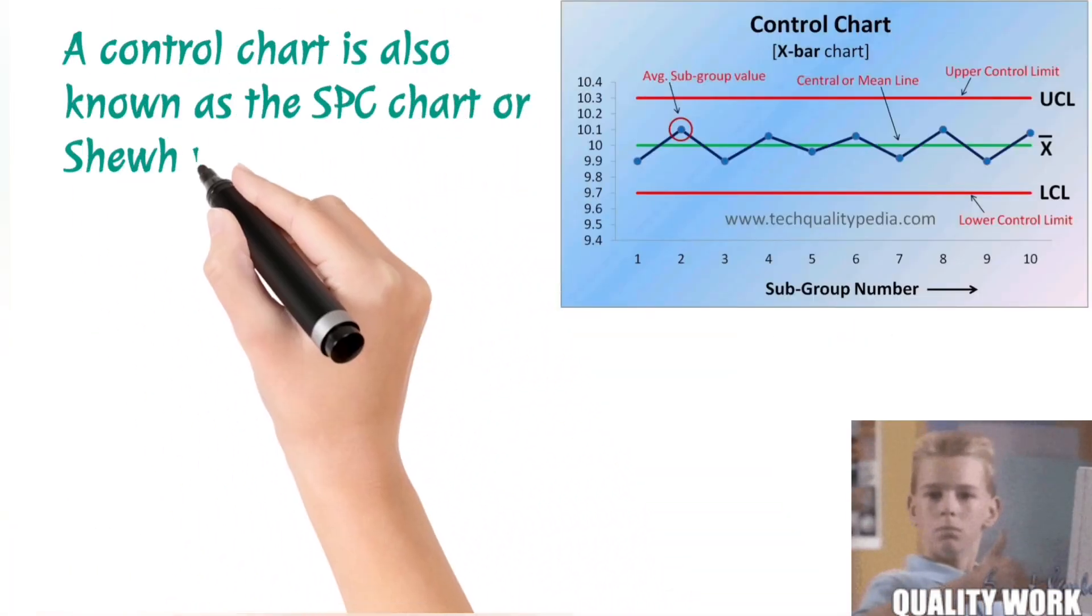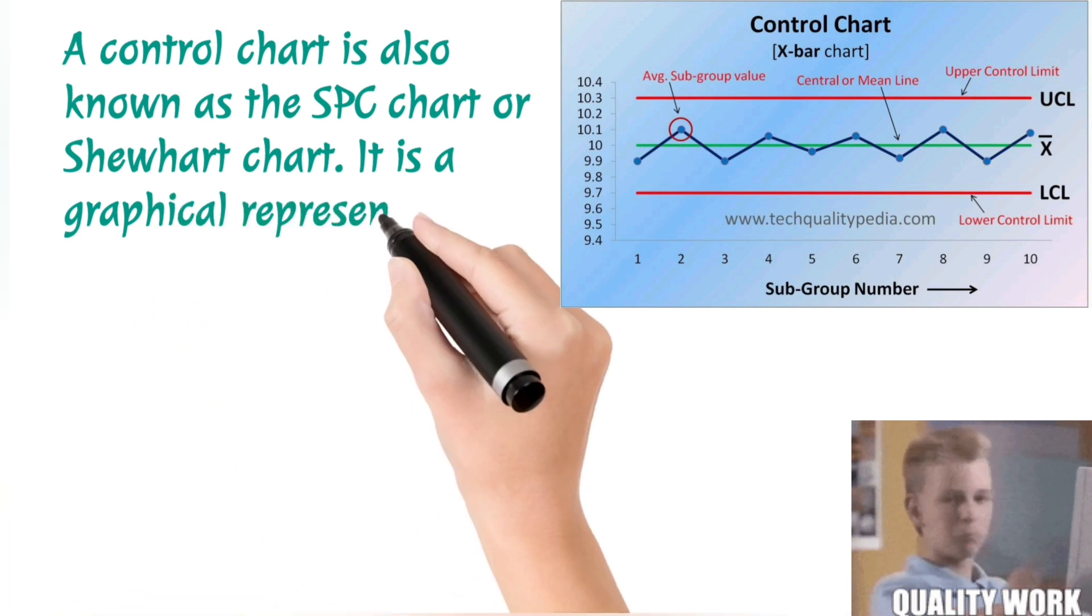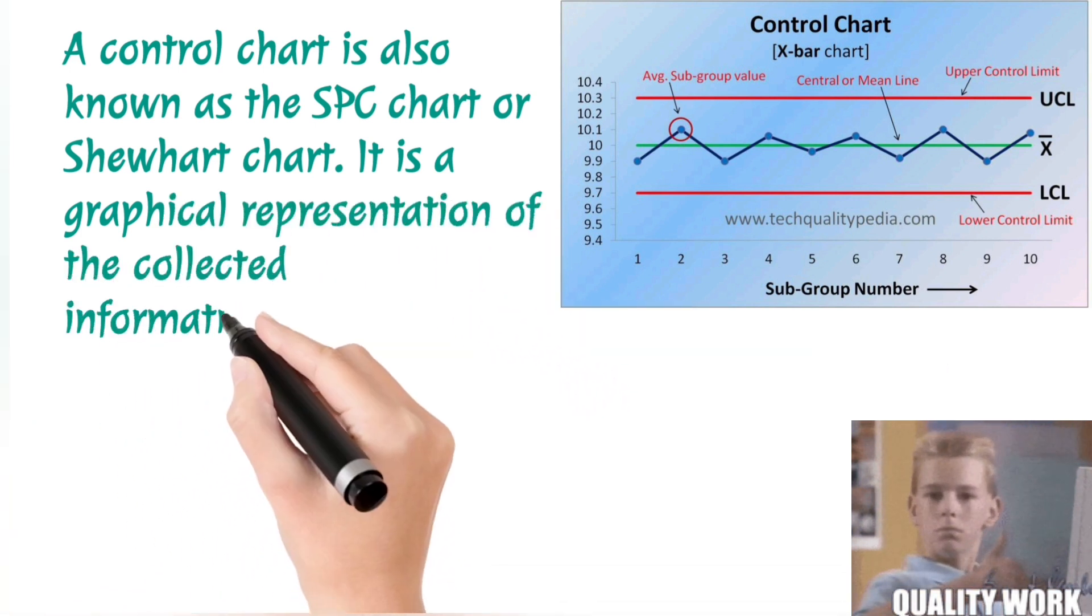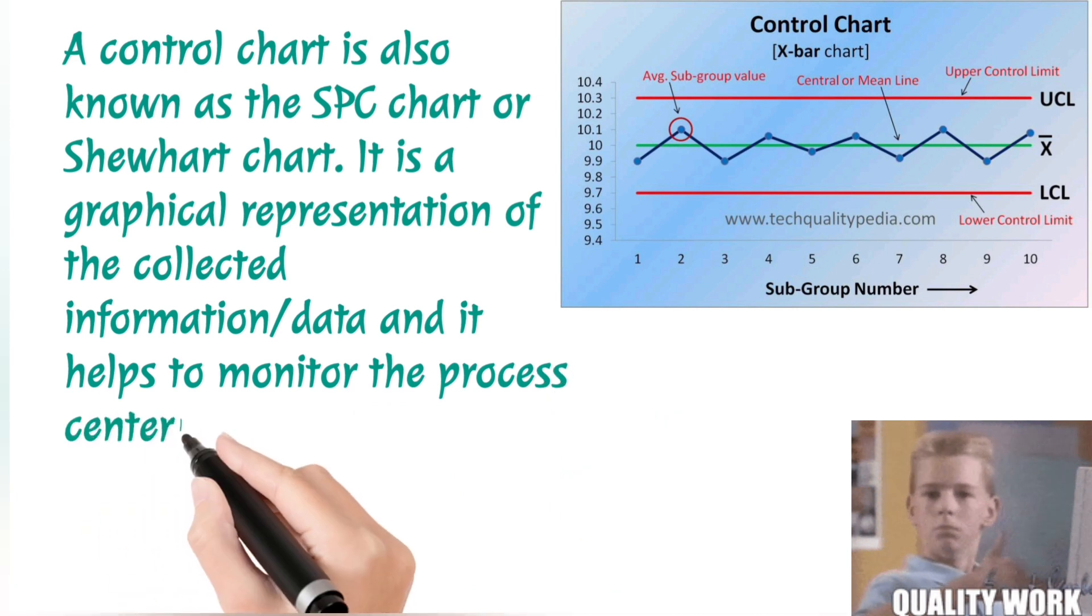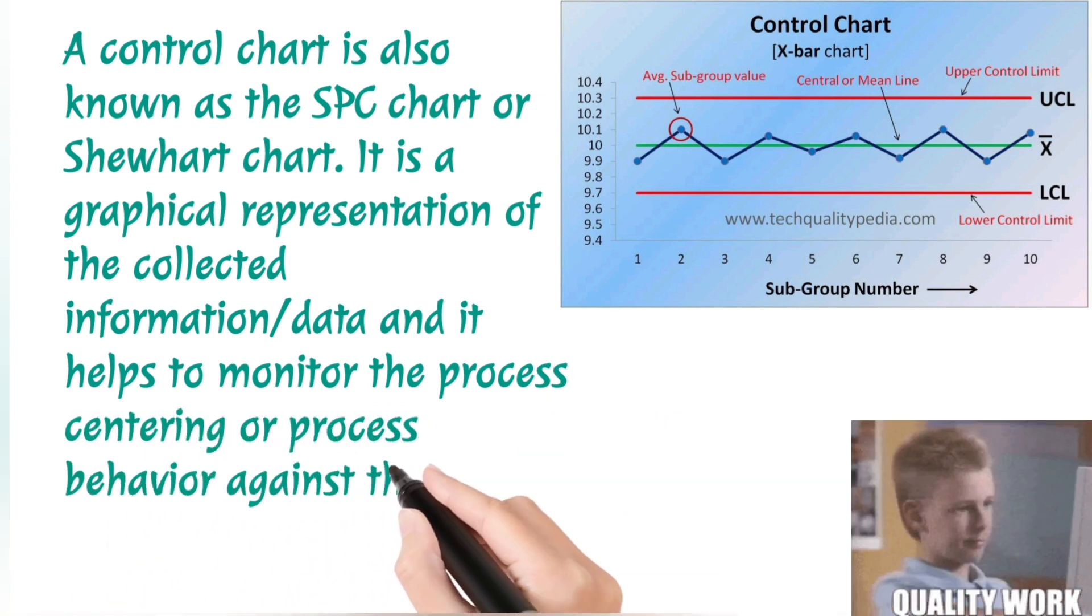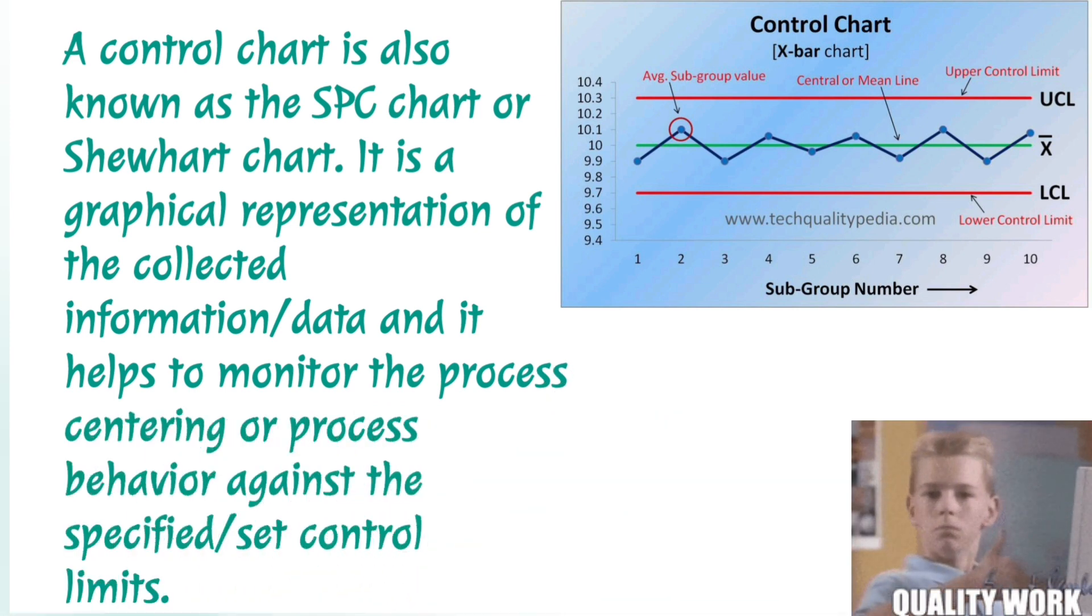A Control Chart is also known as the SPC Chart or Shewhart Chart. It is a graphical representation of the collected information or data, and it helps to monitor the process centering or process behavior against the specified set control limits.